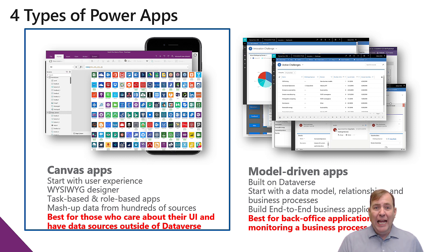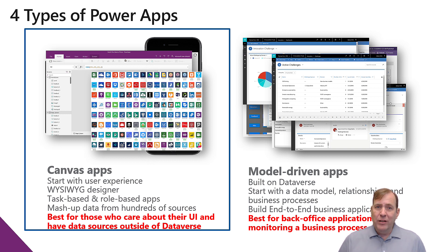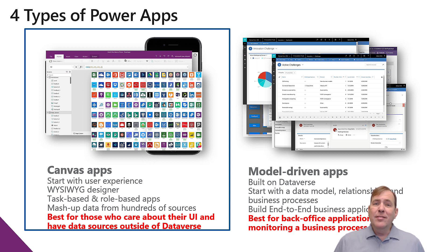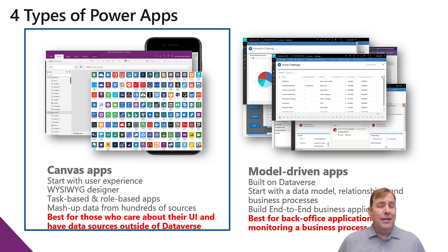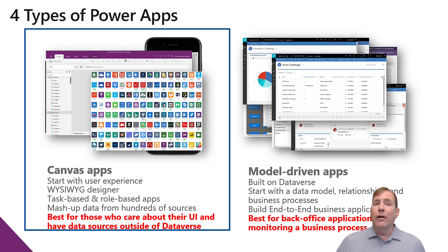Let's begin with the most common example: Canvas applications. Canvas applications are what most people think of when they think of Power Apps. They can connect to over a thousand different data sources, and they're adding more all the time. They are best used for users that are maybe less technically savvy — your internal customers. You want to build an application with bumpers, like in bowling, where users can only do so many things and not hurt themselves in the application.